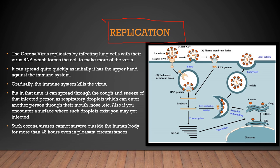Moving onward, let us look at its replication — how it replicates, what is the main power of a coronavirus, how it replicates so quickly. The coronavirus replicates by infecting mainly lung cells with its virus RNA, which forces the cell to make more of the virus. It can spread quite quickly as initially it has the upper hand against the immune system — the immune system is slow at detecting this virus, so people won't even understand that they are infected and no treatments are given.